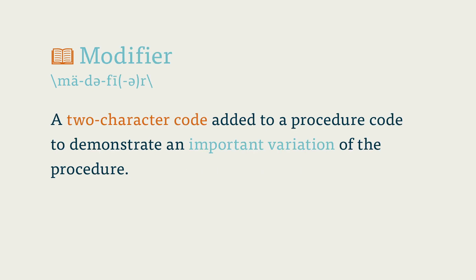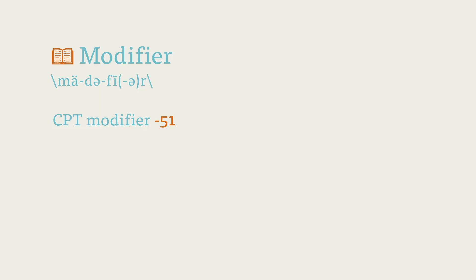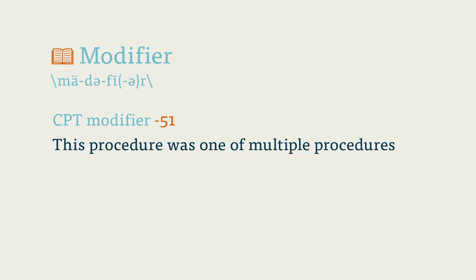Modifier. A modifier is a two-character code that is added to a procedure code to demonstrate an important variation that does not, by itself, change the definition of the procedure. CPT codes have numeric modifiers, while HCPCS codes have alphanumeric modifiers. These are added at the end of a code with a hyphen, and may provide information about the procedure itself, that procedure's Medicare eligibility, and a host of other important facets. The CPT modifier -51, for example, notifies the payer that this procedure was one of multiple procedures.